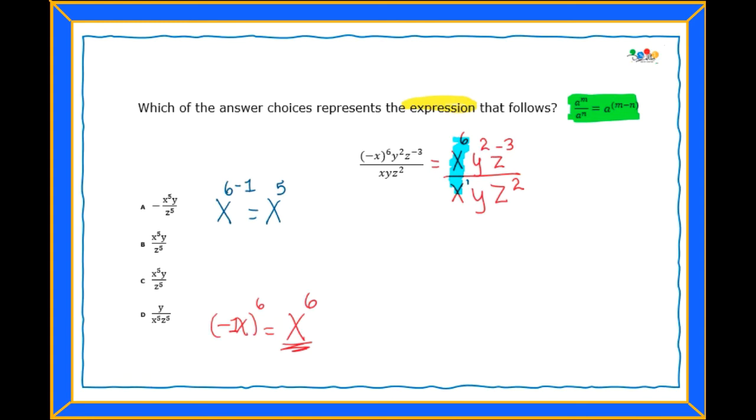Next one is going to be the y. That will be y to the second power minus the y has no exponent, so we write a one. And that will give me y to the first power.